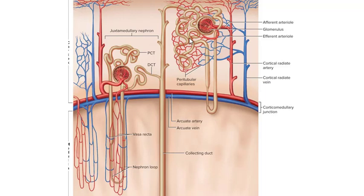The reabsorbed fluid that leaks out is ultimately taken up by the peritubular capillaries. Here are the proximal and distal convoluted tubules with peritubular capillaries all around them. As substances are reabsorbed and sent out of the tubules, these capillaries pick up the water, salt, glucose, and other things and put them back into the body. And of course you've also got the vasa recta along here.